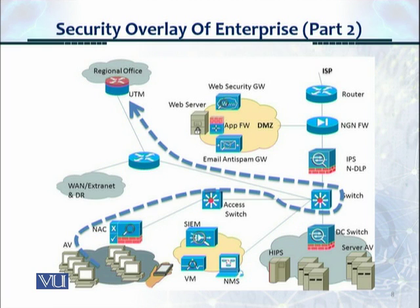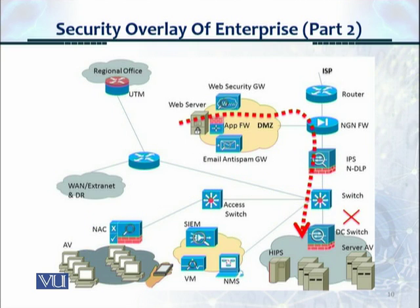This is valid traffic going from a user out into a regional office. It passes through the access switch, distribution switch, and out to the UTM. In the next traffic flow, we see that there is a server in the DMZ which is trying to access the data center switch, and it is not authorized, and hence it is blocked.